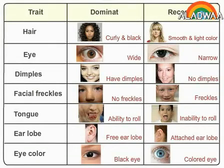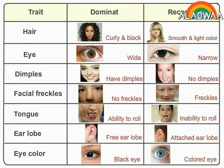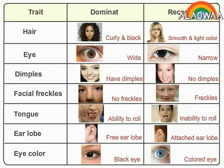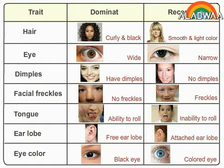The dominant and recessive traits in human beings: a number of human hereditary traits follow Mendelian heredity, where the trait is controlled by one pair of genes. It can be dominant or recessive. Individuals that receive at least one dominant gene from either parent will have the dominant trait, and those that receive a recessive gene from both parents will have the recessive trait appear in them.